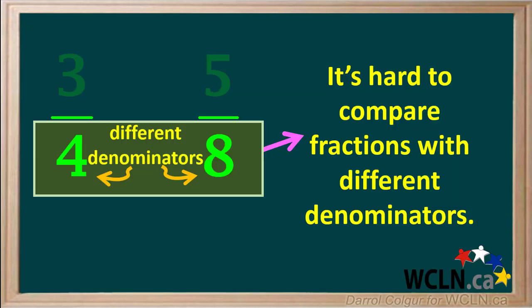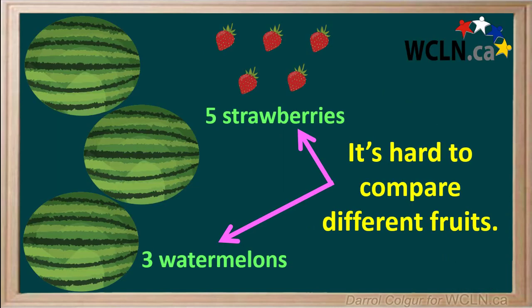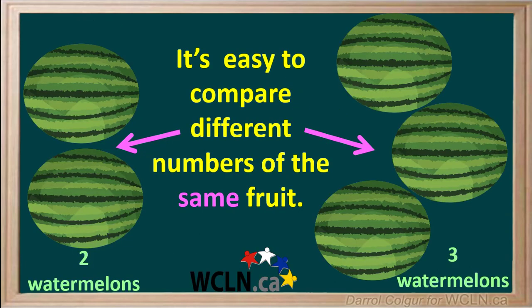So as you can see, it's hard to compare fractions with different denominators, just like it's hard to compare numbers of different fruits. But it's easy to compare different numbers of the same fruit.